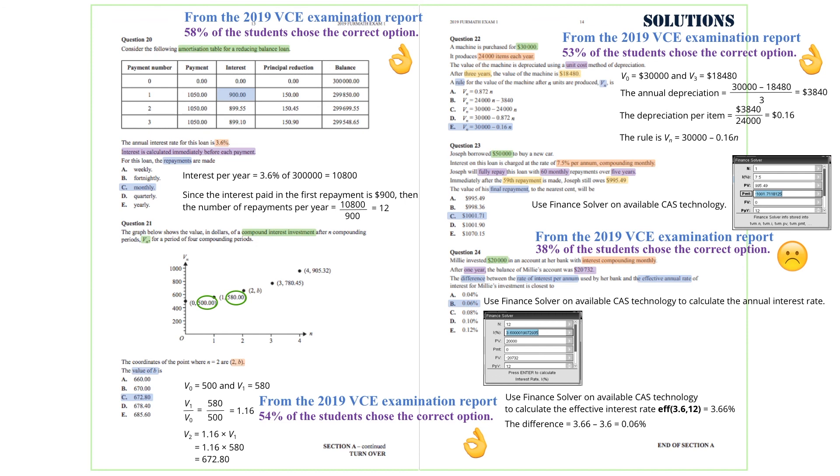So the answer we are after is option B. From the 2019 VCE examination report, 51% of the students chose the correct option.